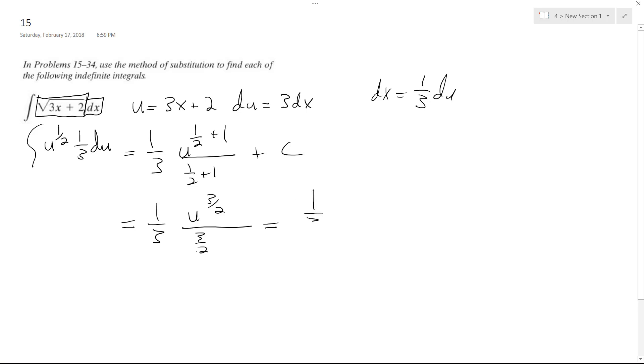Well, let me just do this. 1 third times u to the 3 halves times 2 over 3. And finally, what I get is 2u raised to the 3 halves over 9 plus C.